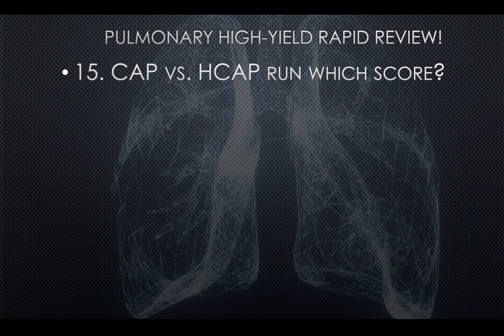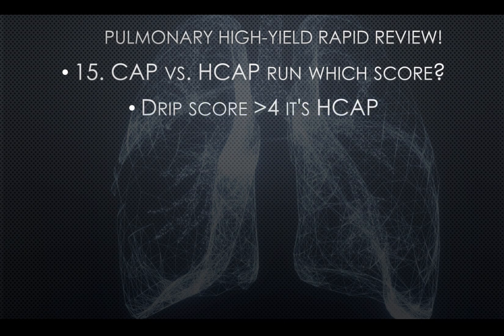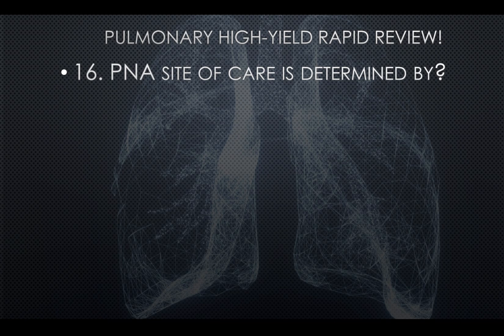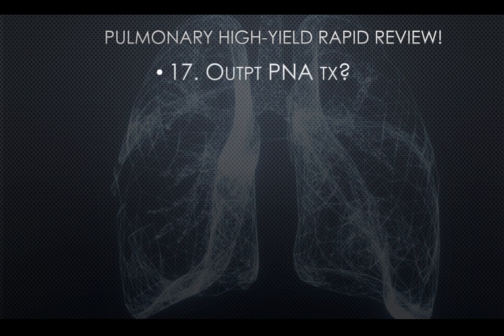Question fourteen: Community-acquired pneumonia (CAP) versus hospital-acquired (HCAP) — you should run the DRIP score. If greater than four, it is HCAP. Question fifteen: Pneumonia site of care is determined by CRB-65. Run CRB-65 and it will tell you where the patient needs to go.